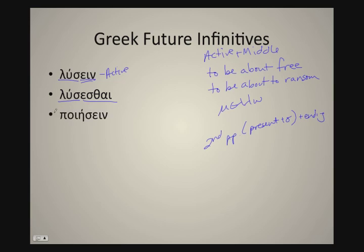For poieo, we're going to take our stem, our second principal part poies, and add our ain: poiesain. And for the middle, we've got our second principal part poies and our primary infinitive middle ending esthi: poies esthi.